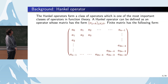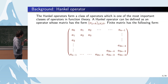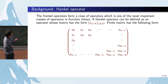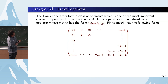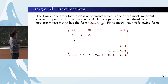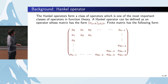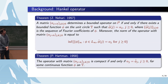Why do we need to study the paraproduct? Because the paraproduct is a Hankel-type operator. A Hankel operator can be defined as an operator whose matrix has the form alpha_{j+k}, where j, k are not less than zero. For example, a finite Hankel matrix has this formula — it is a symmetric matrix and the element only depends on the sum of the first and second coordinates.